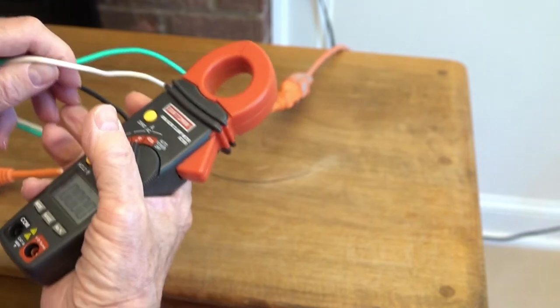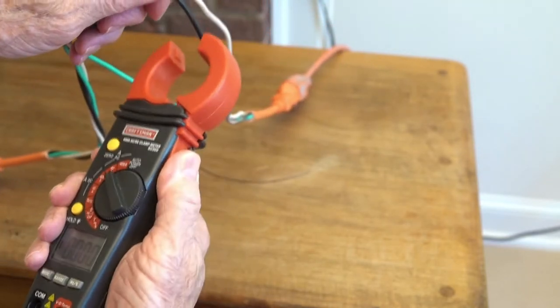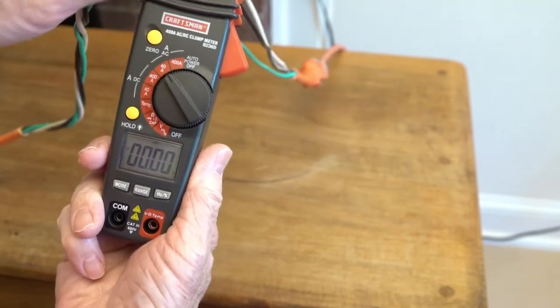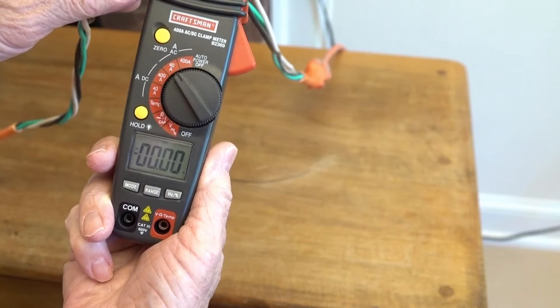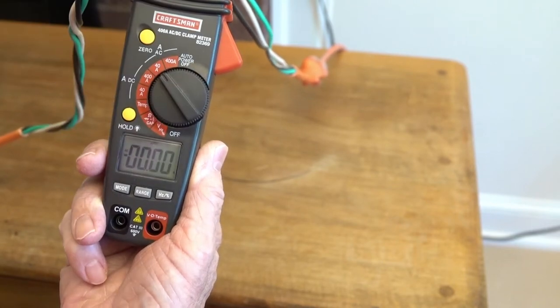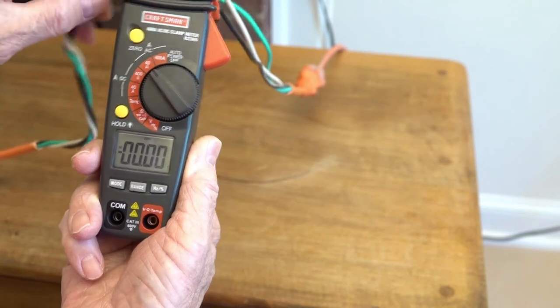Now, this is what happens if you clamp around both of them at the same time. You basically get zero. That's because the current is going in one way and come back out the other. They neutralize each other.